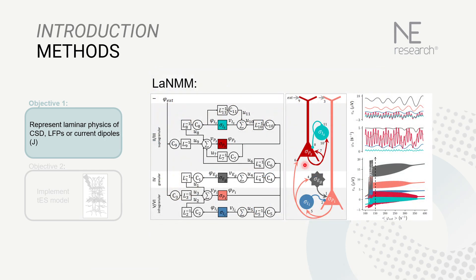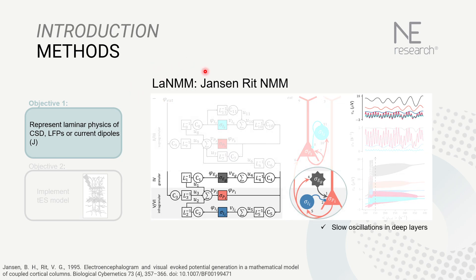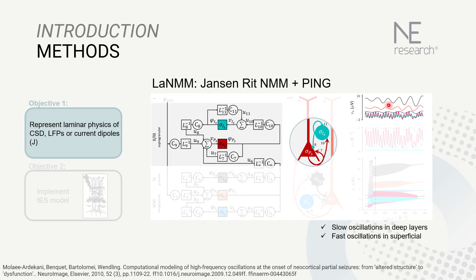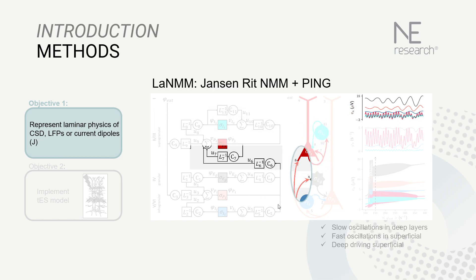This is the model we call the laminar neural mass model. It's composed of a Jansen-centric neural mass model in deep layers oscillating in alpha band and a pyramidal interneuron gamma model, or PING model, in superficial layers oscillating in gamma band. We also created a link between them to simulate the drive from deep to superficial layers.